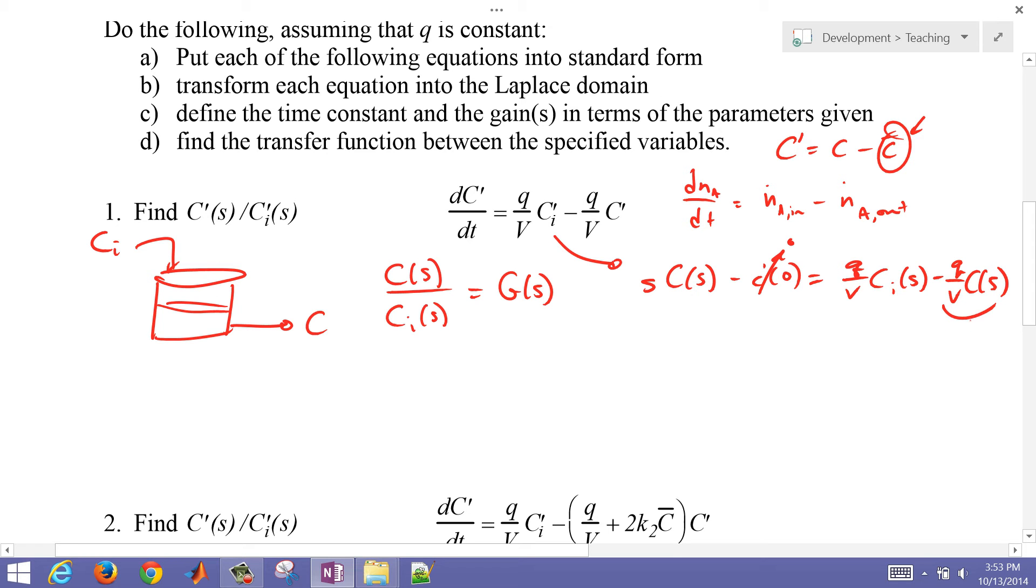So now I just want to collect this onto the left side. And so I have S plus Q over V times C of S equals Q over V times Ci of S. And then if I just divide both sides by Ci of S and also take this and divide it over here as well, then I have S plus Q over V.